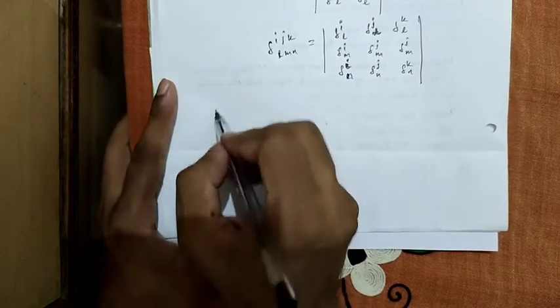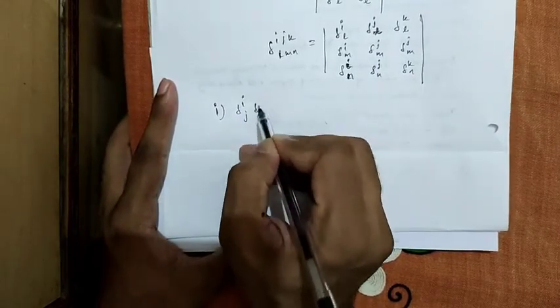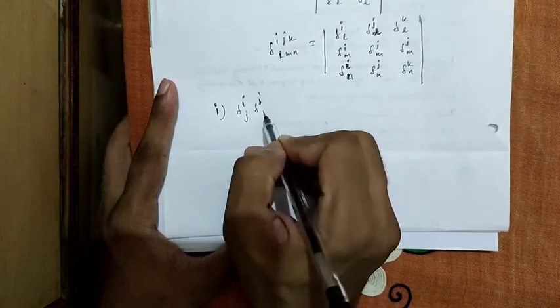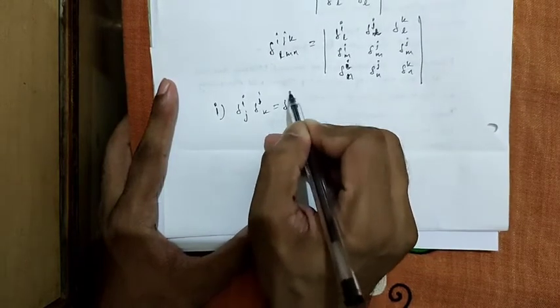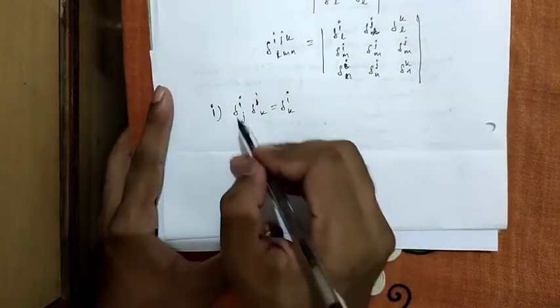Now let's show some examples regarding this in order to understand Kronecker delta. First is del_ij del_jk equals to del_ik, which can be easily shown as one of the properties. So this equals to curl x_i over curl x_j, curl x_j over curl x_k.